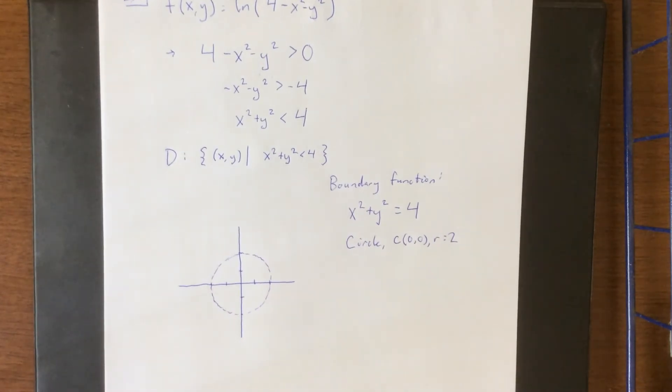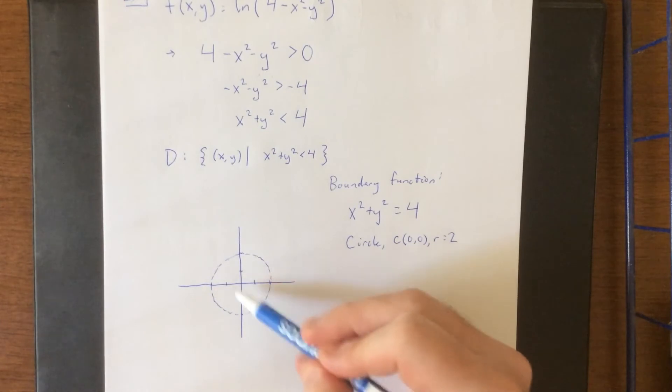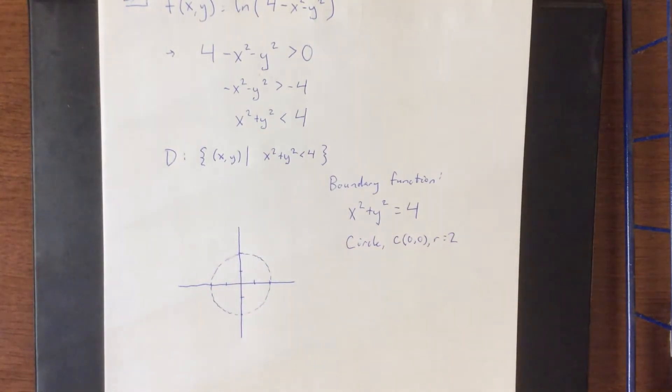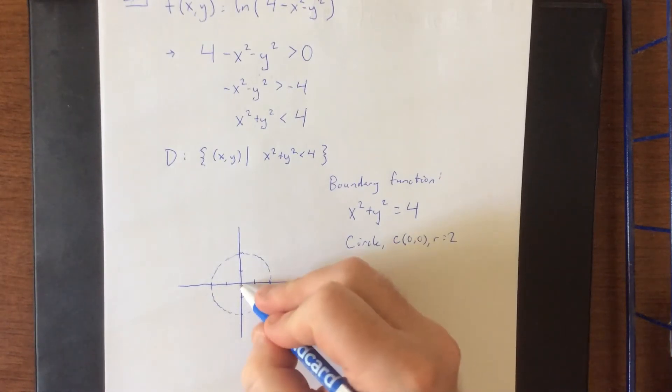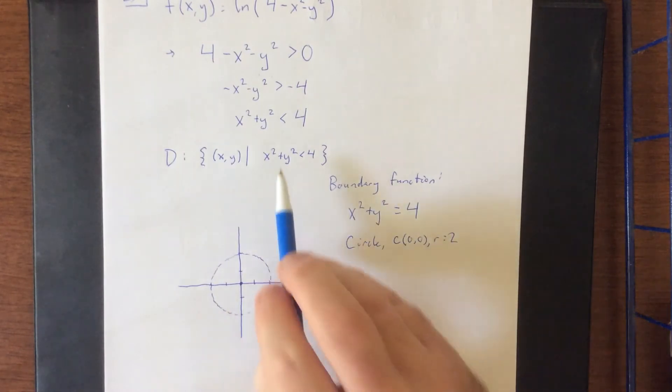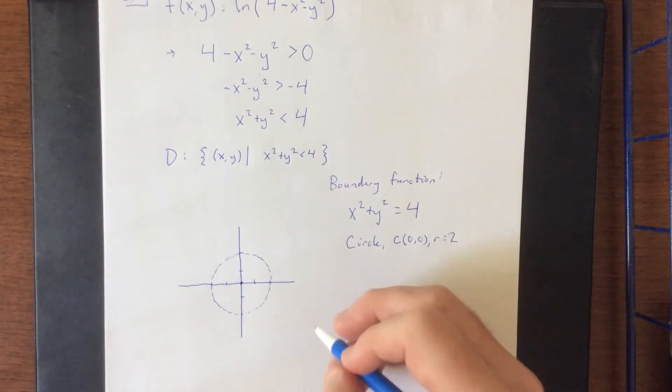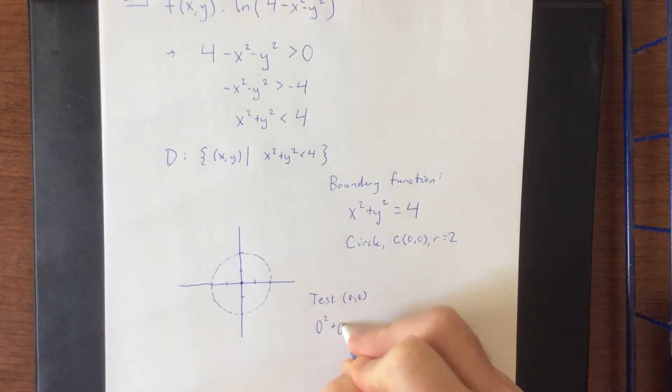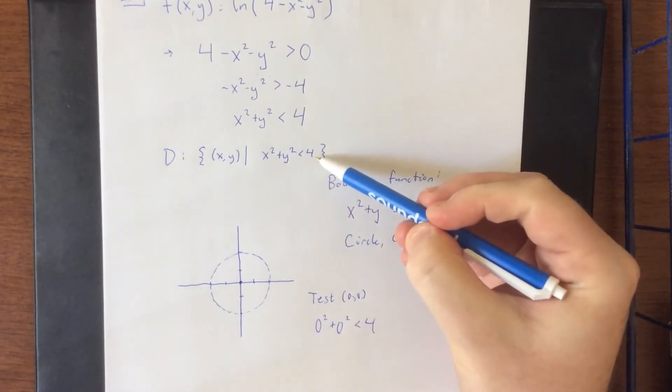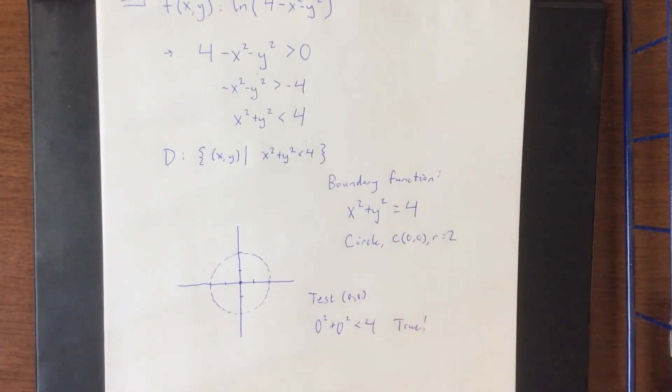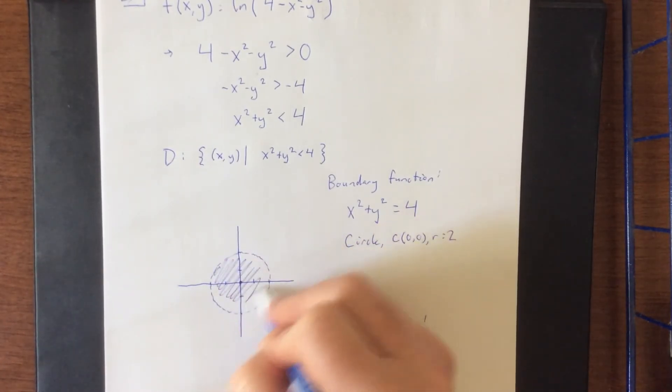Now typically what we would do after this is decide, is the actual domain going to be the inside of the circle or the outside of the circle? Usually the most straightforward way to do that would be to grab a point like (0,0) that's not on the boundary, and plug it into the original inequality. If the inequality becomes true, you've selected the appropriate region. If the inequality becomes false, then you are not in the correct region. So when we test (0,0) we will get a very straightforward 0² + 0² is less than 4 by plugging it into the given region. This would be true, which means that the region that contains (0,0) is the appropriate region for the domain.